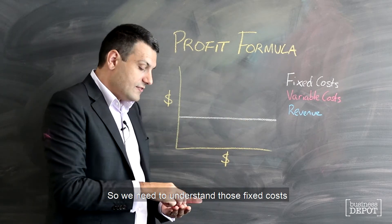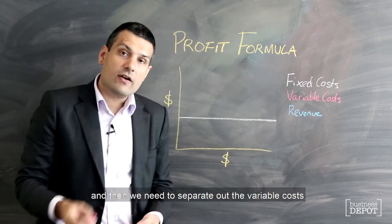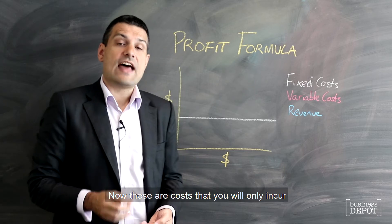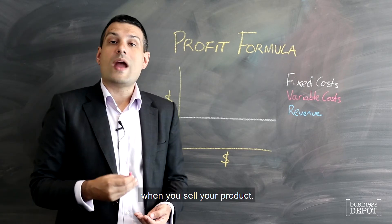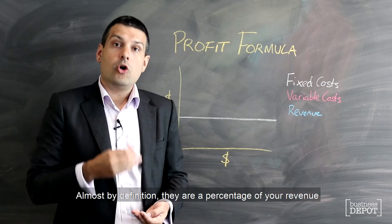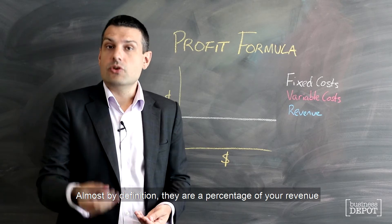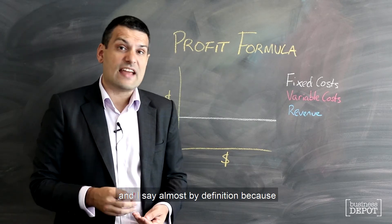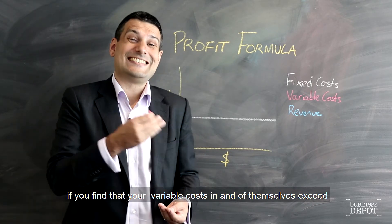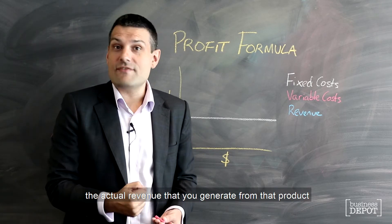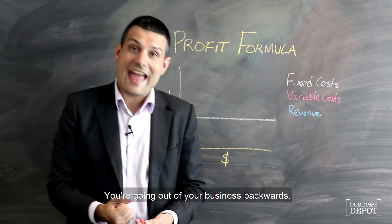So we need to understand those fixed costs, and then we need to separate out the variable costs within your business. These are costs that you will only incur when you sell your product. Almost by definition they are a percentage of your revenue. If you find that your variable costs in and of themselves exceed the actual revenue that you generate from that product, then you've got a dog of a business.